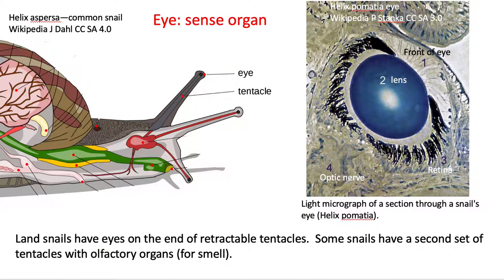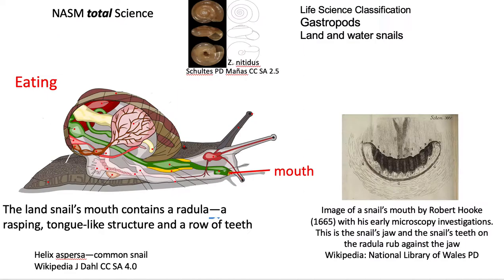For sense organs, we've got the eye on the end of tentacles, which is going to have a lens. Some snails actually have a second set of tentacles but with smell organs — olfactory organs.